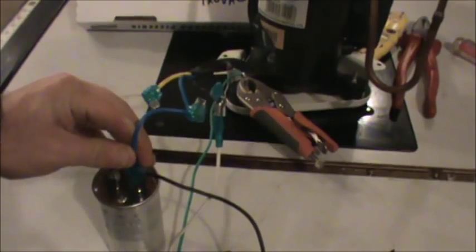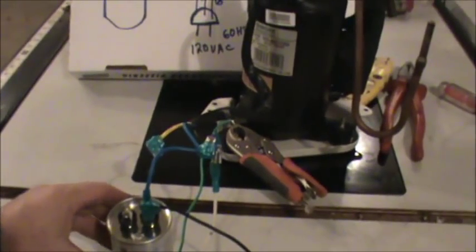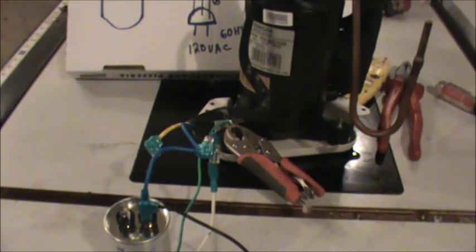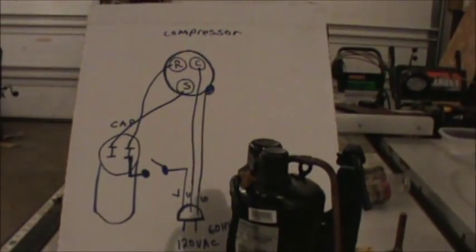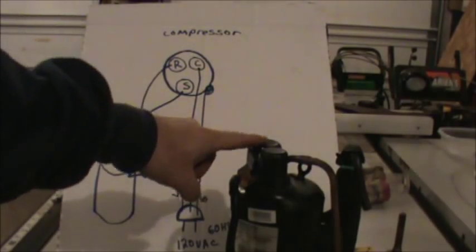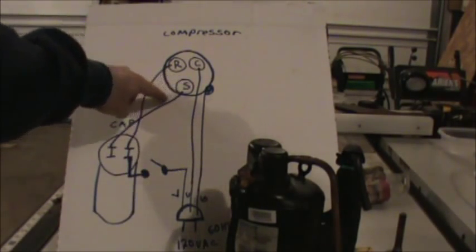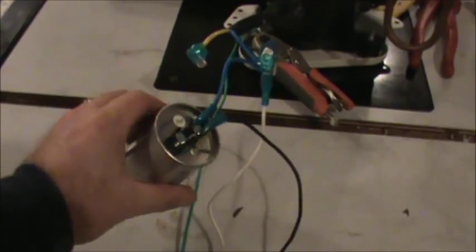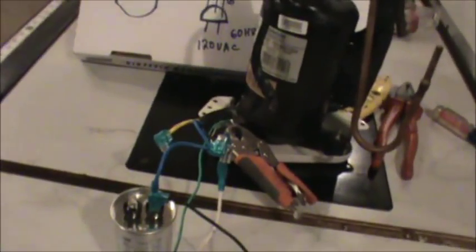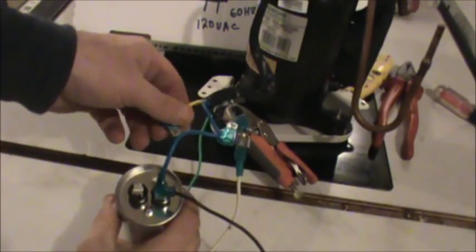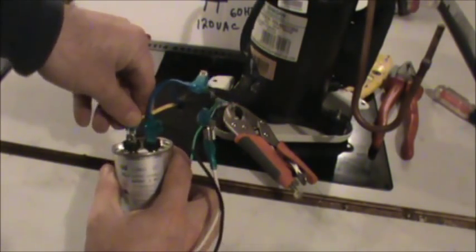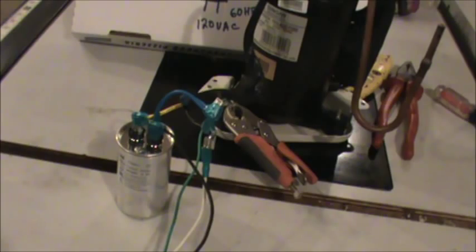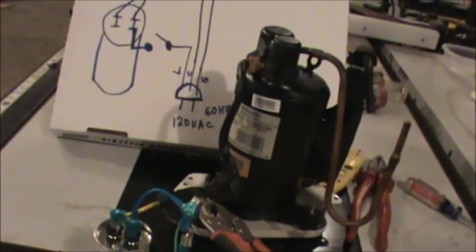Our blue wire is going to go onto the capacitor like that. And the last run we need to make is for our start wire. And our start wire basically goes from the start on our compressor out to the other lug on the capacitor. So it could basically go to either of these two terminals. So we are all wired up, and we're going to plug this thing in and see if it works.